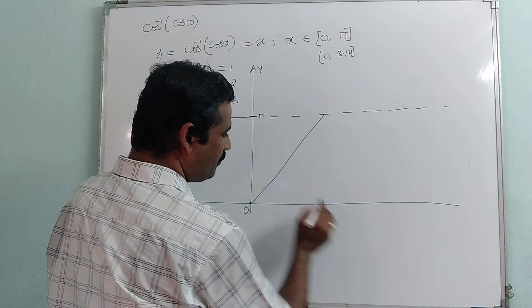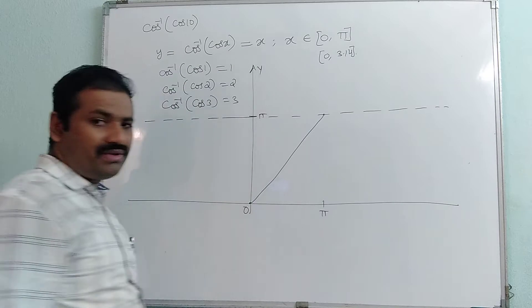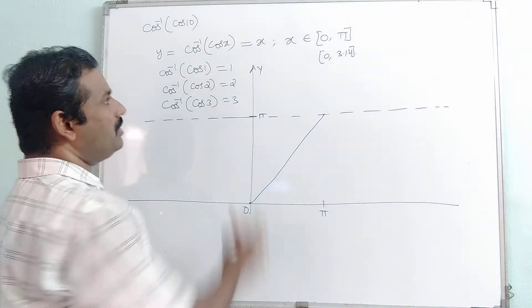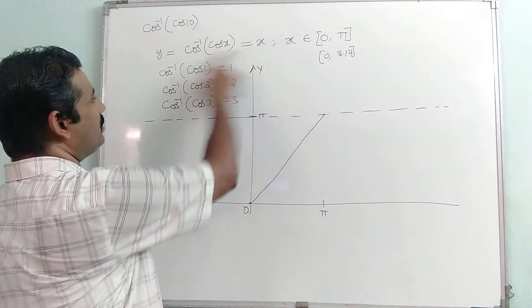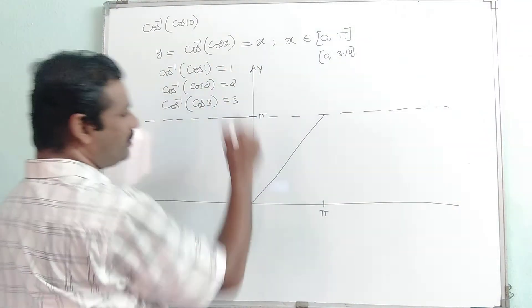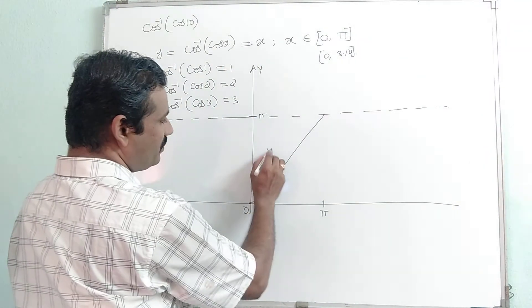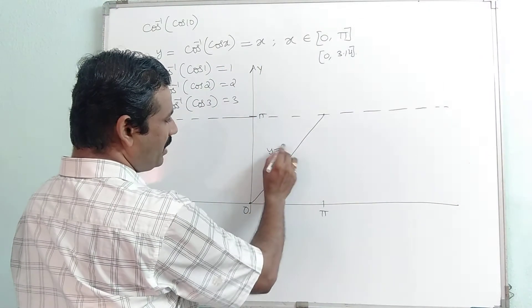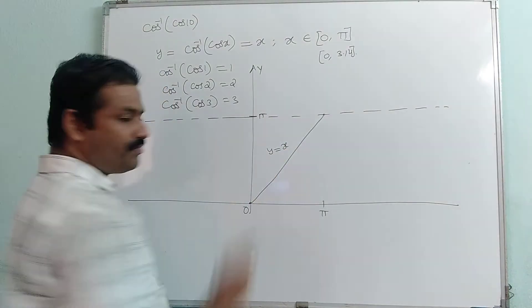Let us look at the graph. In the interval 0 to pi, the graph of y equal to cos inverse of cos x is the line y equal to x.